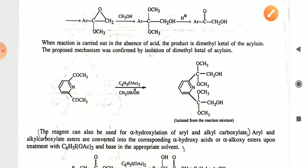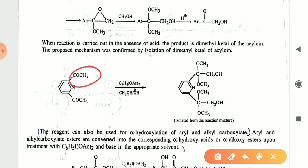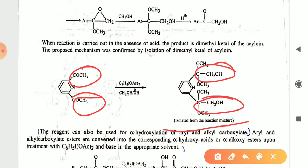When this reaction is carried out in the absence of acid, the product is the dimethyl ketone of the acyloin; the proposed mechanism was confirmed by isolation. Two moles of COCH₃ will convert and be isolated from the reaction mixture. The C=OCH₃ group will convert into the CH₂OH group.